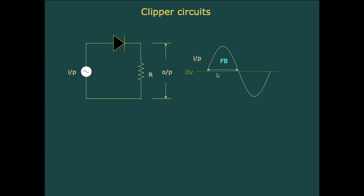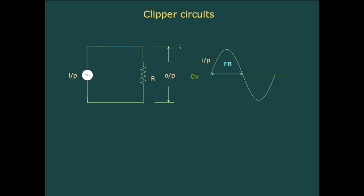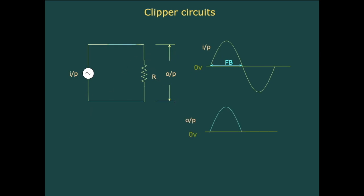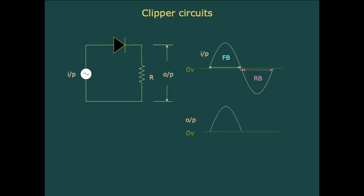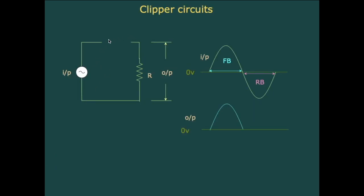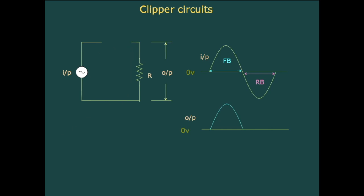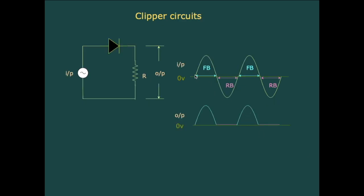When the diode is forward biased it acts as a closed switch. If the diode is a closed switch, the output voltage equals the total input voltage, so during the full positive half of the input signal the output is identical to the input. During the negative half of the input signal the diode is reverse biased, acting as an open switch, meaning no current flows through resistance R and the output voltage equals zero. Thus the negative halves of the input signal are clipped off.